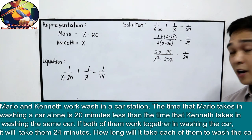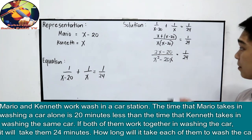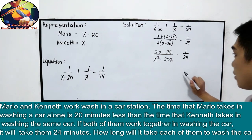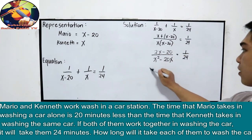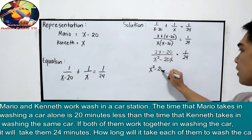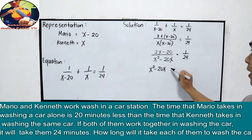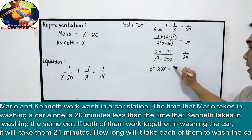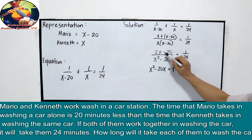Cross multiply para mawala na yung ating denominator. So, x squared minus 20x times 1. So, siya pa din. Is equal to 24 times 2x. That is 48x. And negative 20 times positive 24. Negative, ilan yan? 480.